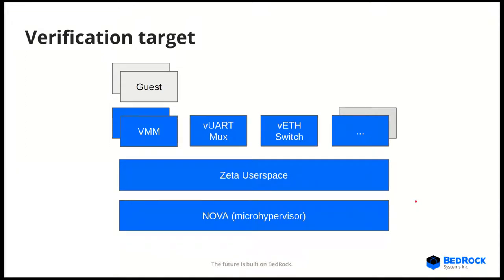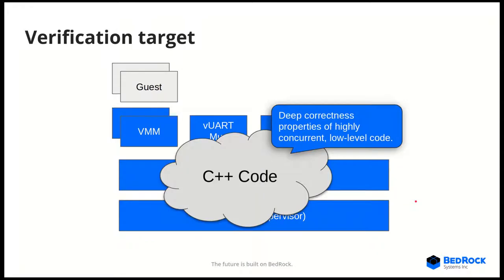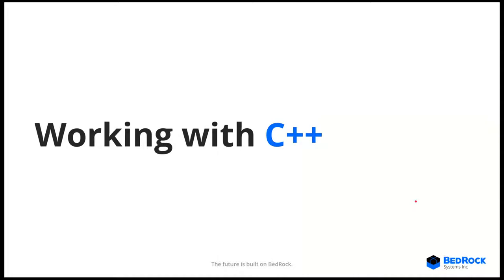Our system-level components are essentially a hypervisor, and user level applications running on top of it provide virtual machine access as well as services like virtual Ethernet and virtual console multiplexing. We'd also like the ability to write unverified applications that run side-by-side with our verified ones, sandboxed appropriately. All of this code is written in C++ and we want to establish deep correctness properties for this low-level code that is also highly concurrent. So the topic of this talk is: how do we work with C++ and achieve these strong guarantees?